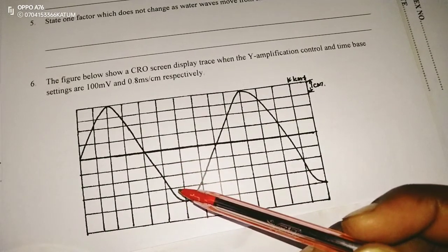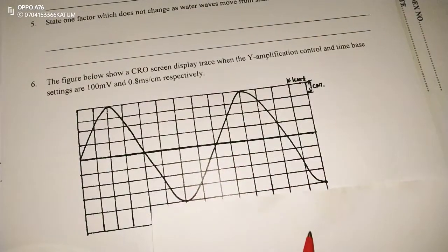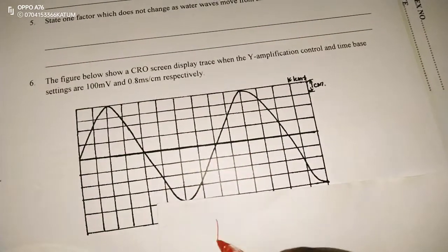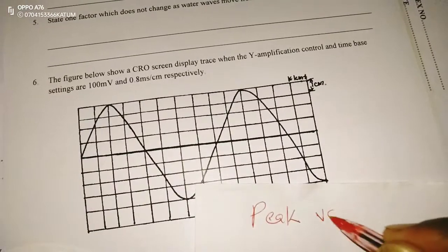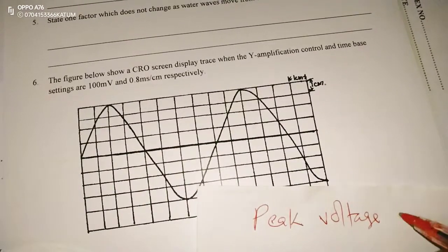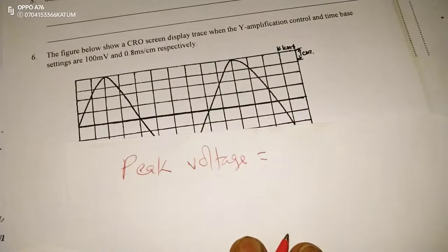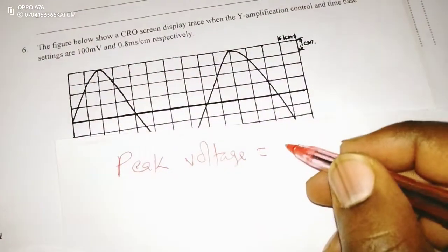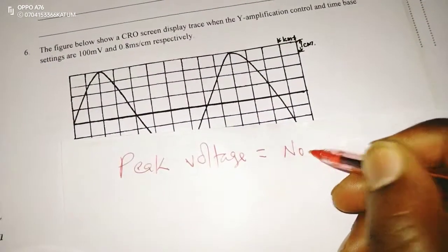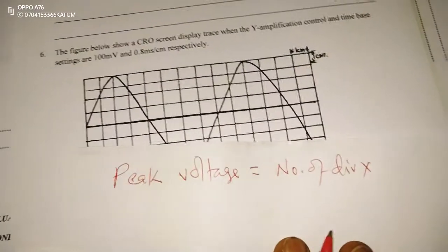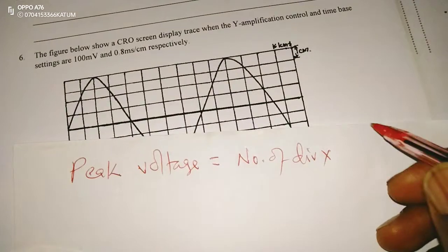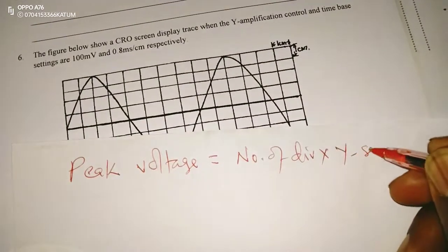Which means the peak voltage is going to be the number of divisions multiplied by the control setting, or the Y setting.